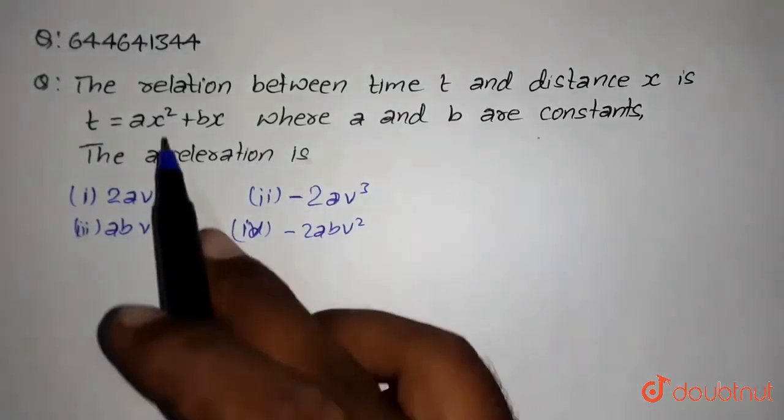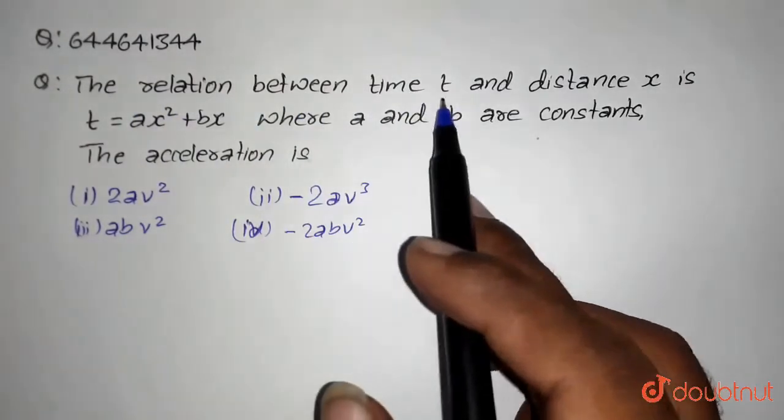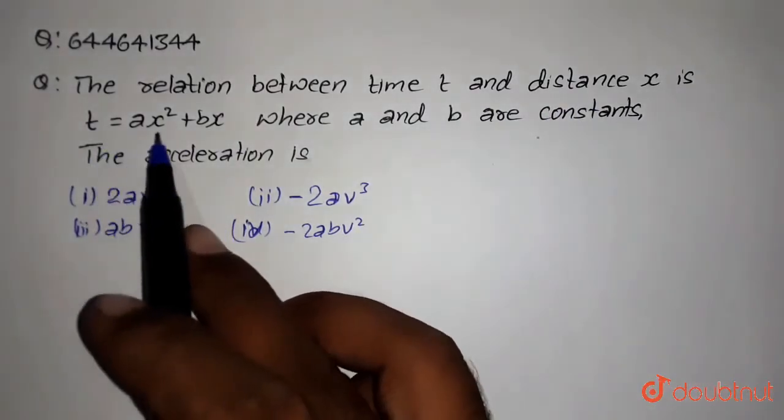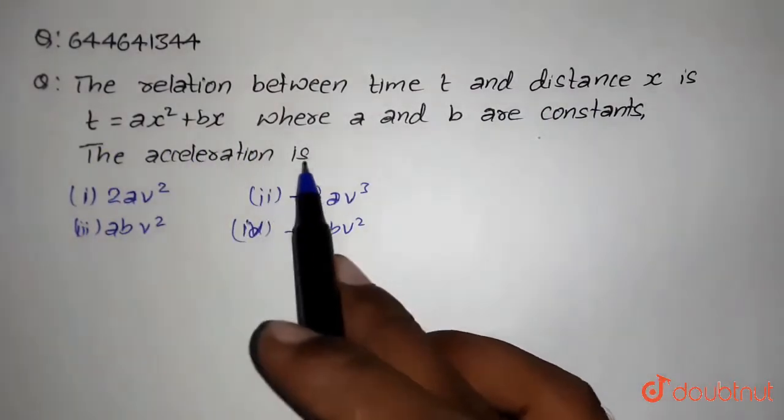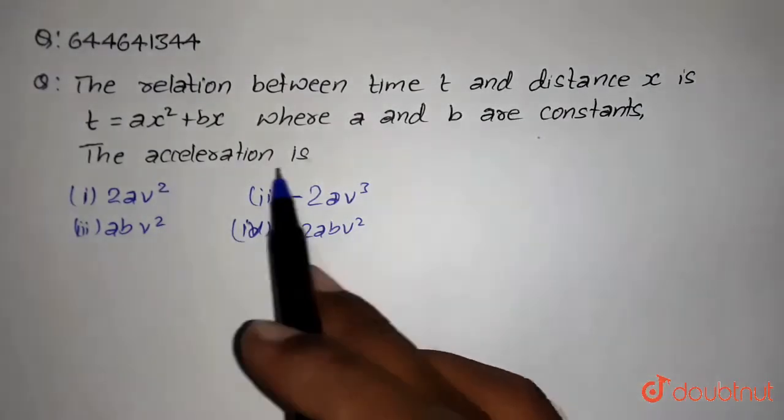Hello students, so here we have the question. The relation between time t and distance x is t equals ax square plus bx, where a and b are constants. The acceleration is...